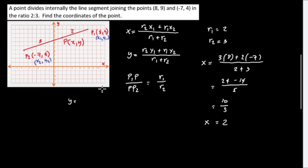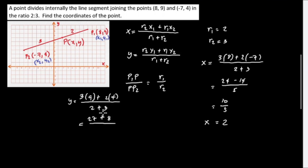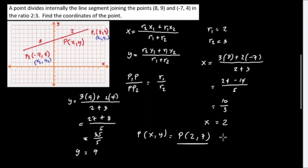Solving for Y using the formula: Y equals (R2·Y1 plus R1·Y2) over (R1 plus R2), which is (3 times 9 plus 2 times 4) over (2 plus 3). That gives (27 plus 8) over 5, equals 35 over 5, so Y equals 7. Therefore the coordinate of P is (2, 7). Based on the diagram, X is 2 and Y is 7.